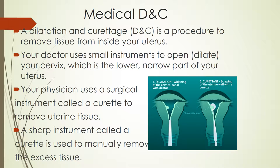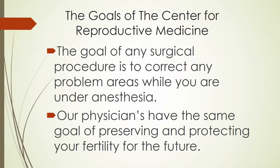A D&C, also called a dilatation and curettage, is a procedure to remove the tissue from inside your uterus. Your doctor uses small instruments to open or dilate your cervix, which is the lower, narrow part of your uterus. Your physician uses a surgical instrument called a curette to remove the uterine tissue. The goal of any surgical procedure is to correct any problem areas while you are under anesthesia. Our physicians have the same goal of preserving and protecting your fertility for the future.